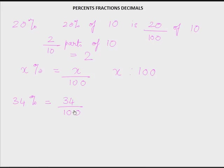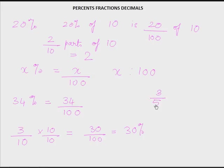Similarly, if I give you a fraction and I want you to express it as a percent, I could give you the fraction 3 over 10. To express this as a percent, I would need it as a fraction with denominator 100. So I would multiply both numerator and denominator by 10, I would get 30 over 100 and that becomes 30%. Converting a fraction to a percent requires rewriting that fraction as an equivalent fraction with denominator 100. Another example: the fraction 3 over 5 — to write this as a percent, I need to make 5 into 100, so I multiply both numerator and denominator by 20 and I get 60 over 100, therefore 60%.